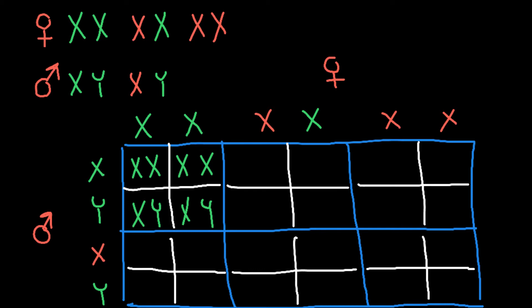Now let's look at the carrier female mating with a normal male. This female may give a defective X chromosome while the male gives a normal X chromosome, producing a carrier daughter. She can also give a normal X chromosome, and the male can give a normal Y chromosome, producing a normal son. So we get carrier daughters and normal sons in this combination.